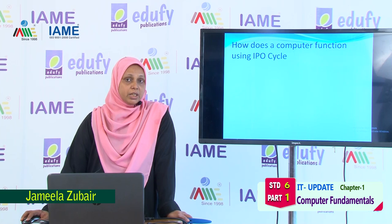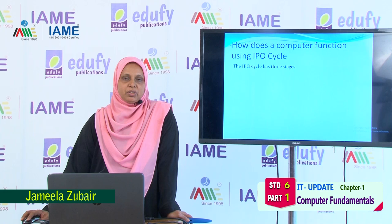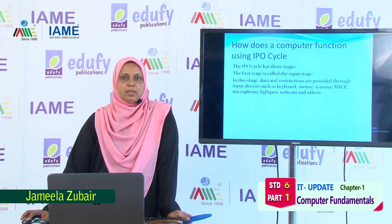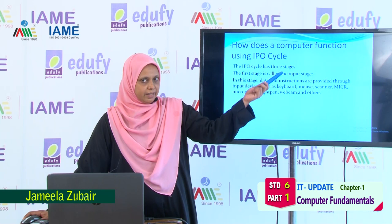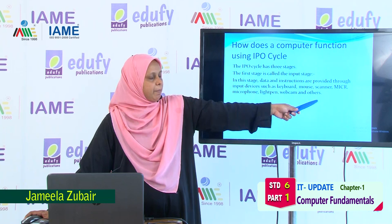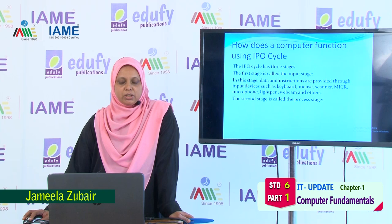Now, how does a computer function using the IPO cycle? The full form of IPO is Input, Processing, Output. The IPO cycle has three stages. The first stage is called the input stage. In this stage, the data and instructions are provided through input devices such as keyboard, mouse, scanner, microphone, light pen, webcam, and so on.